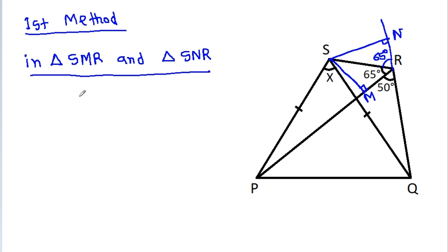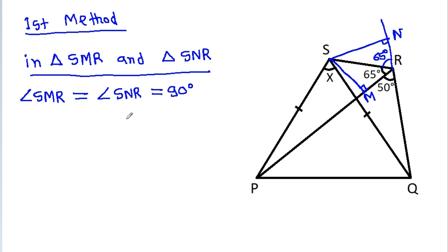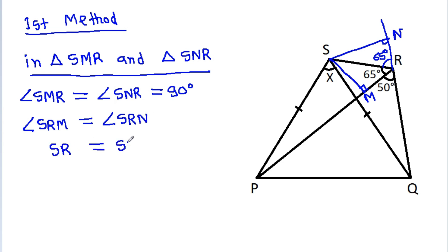Then in triangle SMR and triangle SNR, angle SMR is equal to angle SNR, that is 90 degrees, and also angle R is common. So triangle SMR will be congruent to triangle SNR.